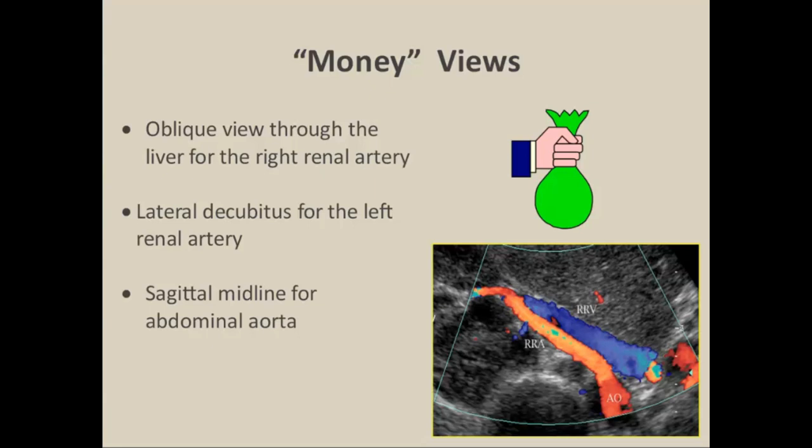One important trick is to observe the color pattern. If you've optimized the color flow pattern by adjusting the pulse repetition frequency to laminar flow, you'll also see signs of stenosis. For the left side, we put the patient left-side-up, scan through the left kidney, and identify the renal artery from that projection.